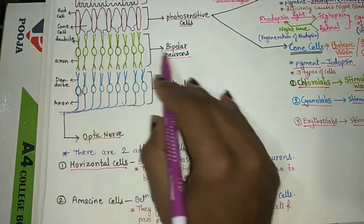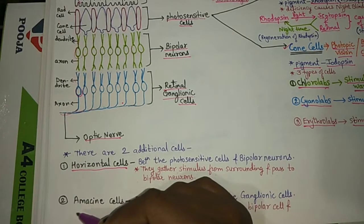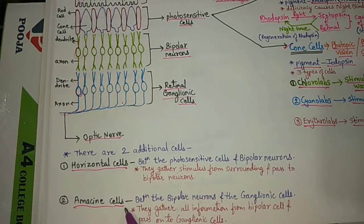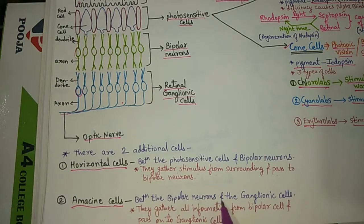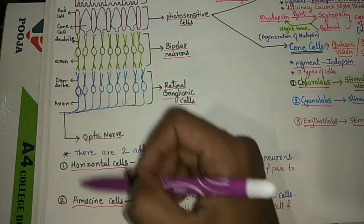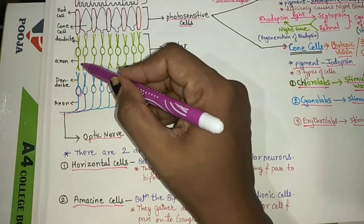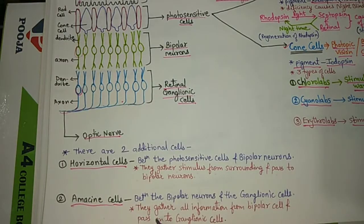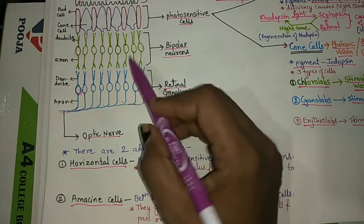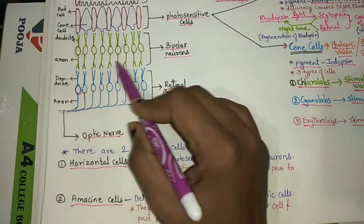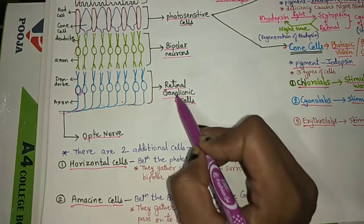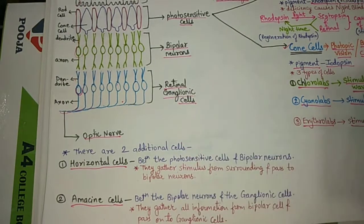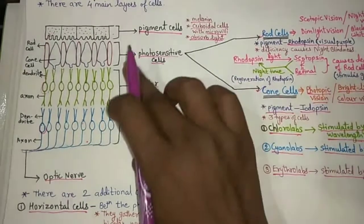The second additional layer is the amacrine cells, which are present between the bipolar neurons and the ganglionic cells. Their function is to gather all the information from the bipolar neurons and pass it to the retinal ganglionic cells. This completes the structure of the retina.